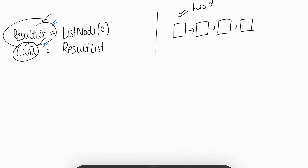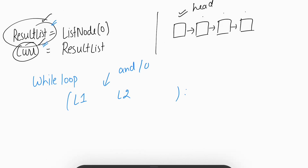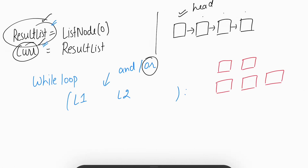After that we take a while loop. What will be the condition? We will iterate while L1 and L2 are not None — but the question is whether we use AND or OR. We will use OR. Why? Because suppose we have two linked lists of different lengths; we want to iterate until the last element of the longer list, so that's why we use OR.